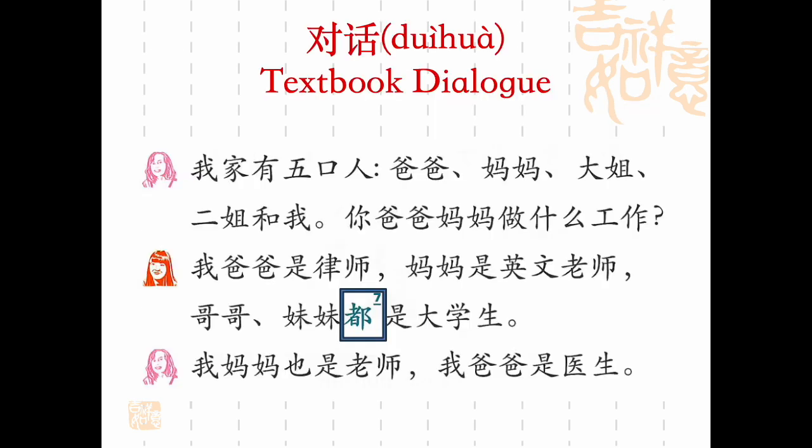Let's go on and look at the final grammar point we'll be focusing on for next class: the adverb 都, marked number seven on your screen. 白鹰爱 says: 我爸爸是律师，妈妈是英文老师，哥哥妹妹都是大学生。Let's look a bit closer at this grammar point.